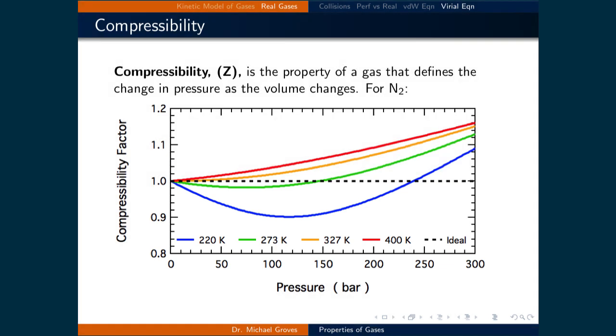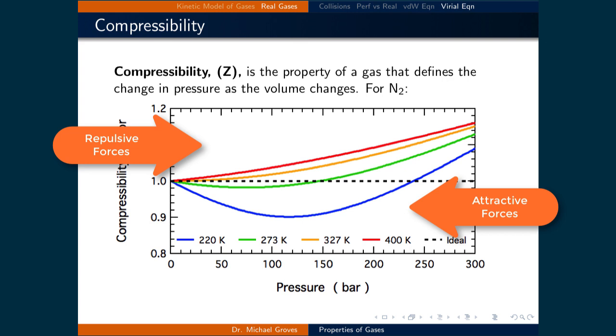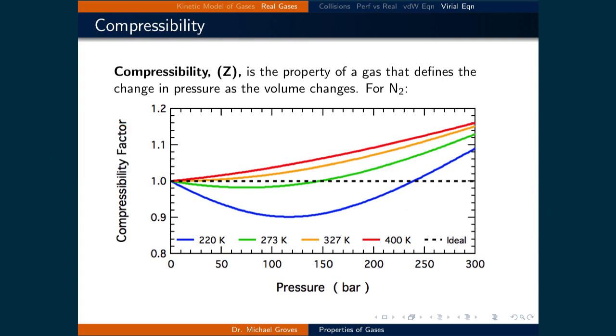Remember that ideal behavior means that there are no intermolecular interactions. So, being larger than 1 signifies repulsive forces dominate, and being less than 1 means that attractive forces dominate. Therefore, it should be no surprise that as the pressure increases, gases tend to have compressibilities higher than 1, which reflects that the molecules are being forced very close together and repel each other. Also note that all the lines converge to 1, or ideal conditions, at low pressures, reflecting when all the gases exhibit ideal behavior.